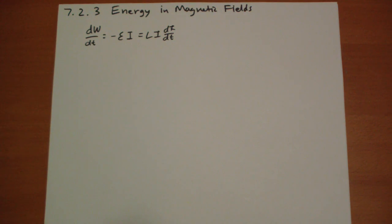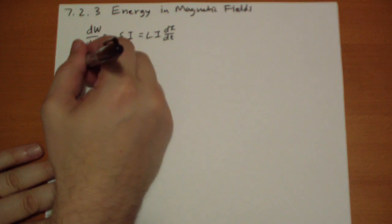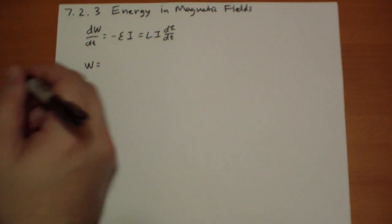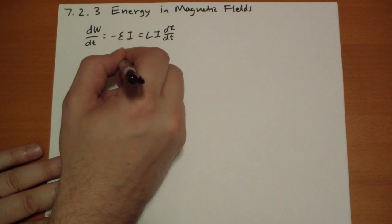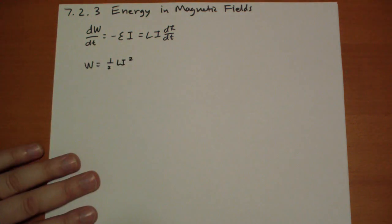If you integrate over the total time to build up to get to a current I, then the integral will actually give you that the total work done is one-half LI squared.